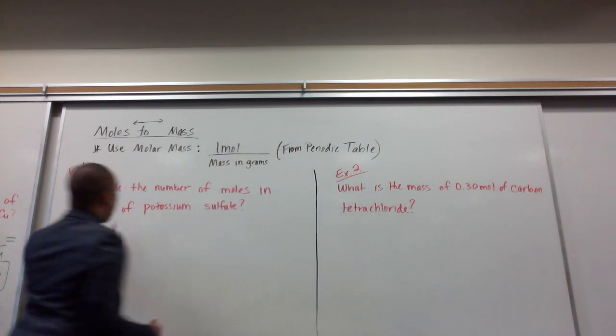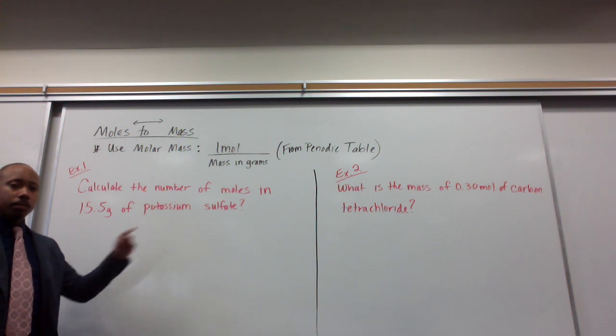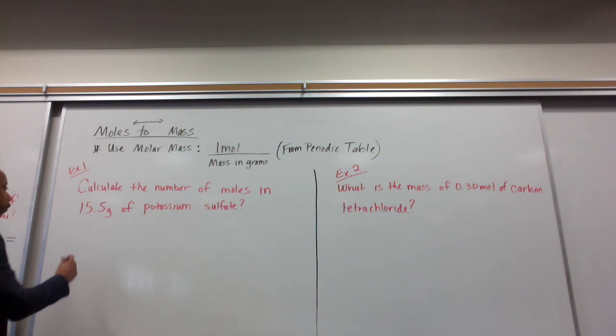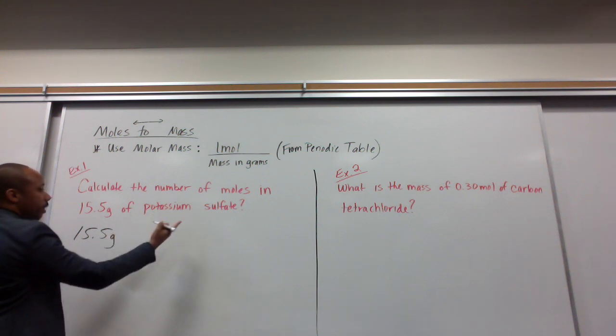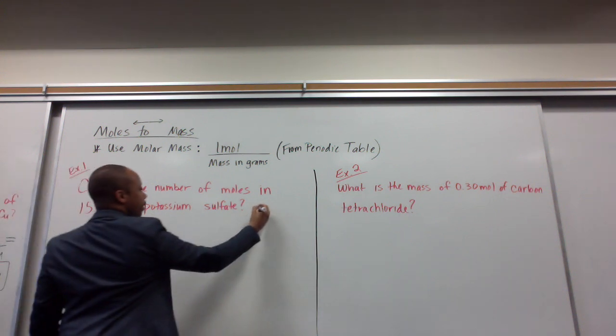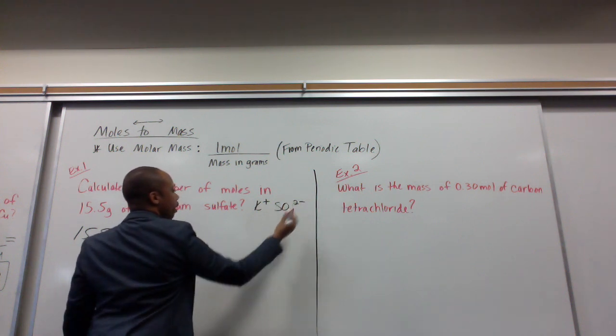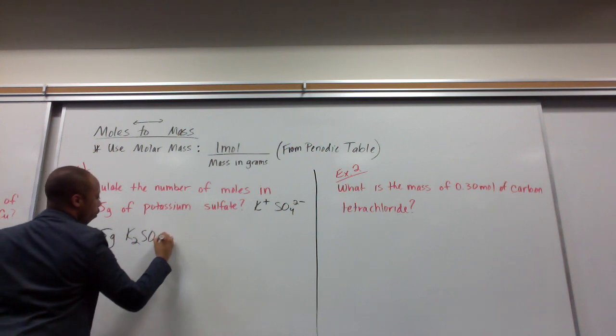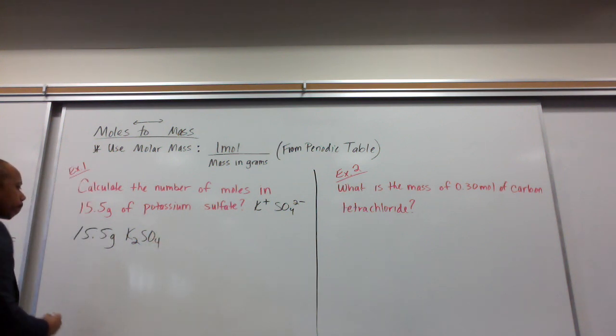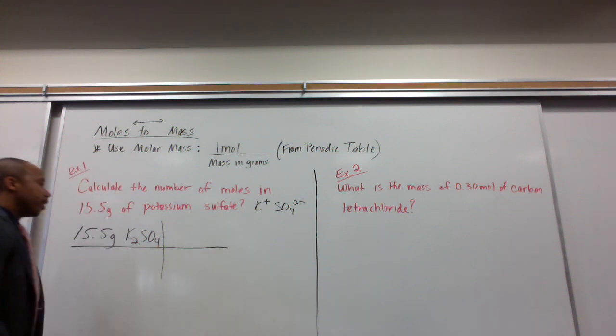Our first example says, calculate the number of moles in 15.5 grams of potassium sulfate. So the first thing I do is start off with what I'm given. 15.5 grams of potassium sulfate. Remember, potassium K plus sulfate, SO4, 2 minus crisscross applesauce. We get K2SO4. Put that in my brackets.